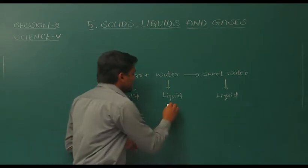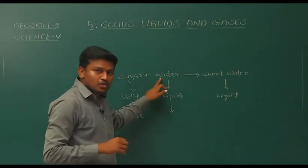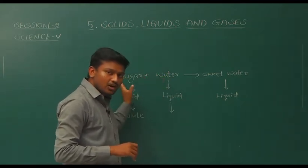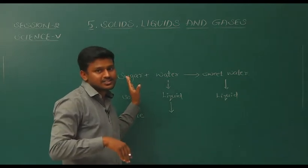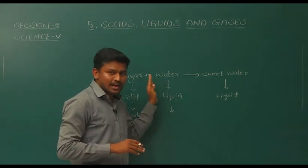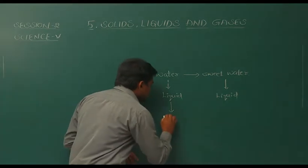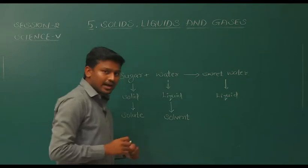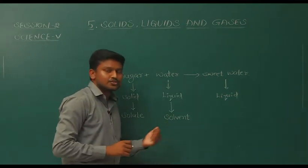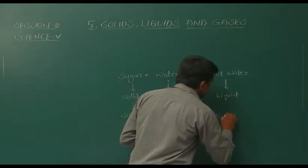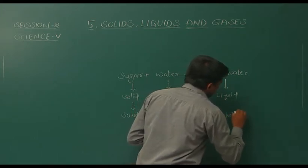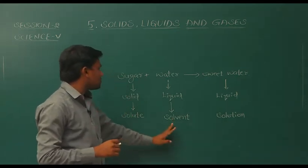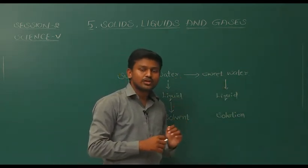The solid which dissolves in a liquid — this liquid allows the solid to dissolve in itself, so we call this liquid the solvent. The combination of solute and solvent gives us a solution. So here, solute is sugar, solvent is water, and the solution is sweet water.